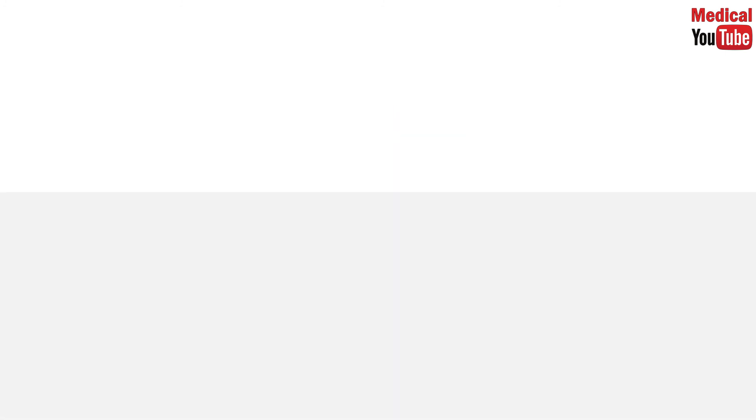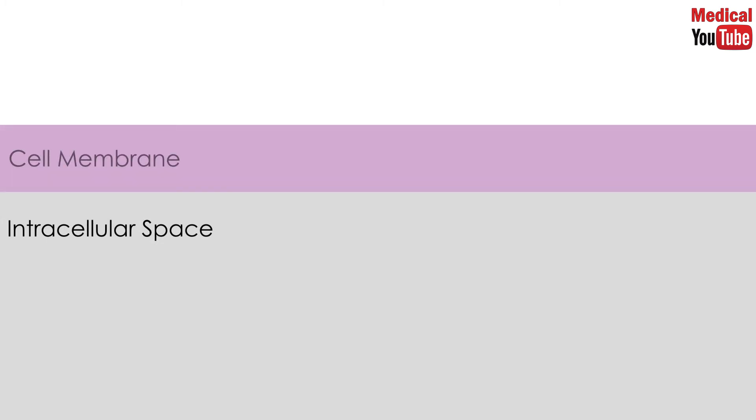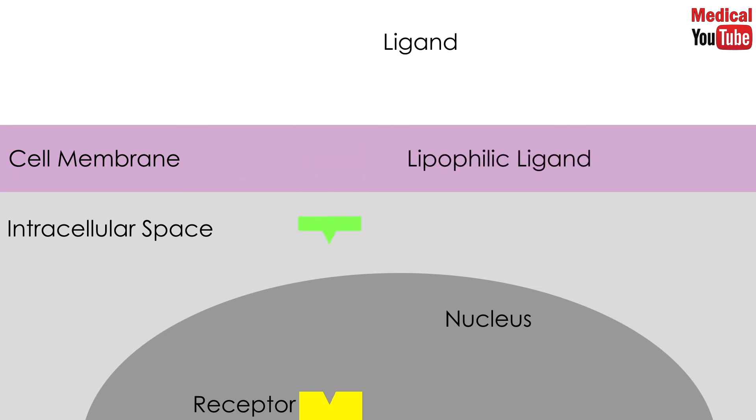Nuclear receptors are intracellular receptors, so the ligand must be highly lipophilic to be able to enter the cell to reach them. Their action is obtained through synthesis of new proteins or enzymes in the cell.